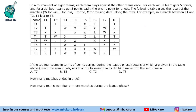For each win, a team gets 5 points. For a tie, both teams get 3 points, and there is no point for a loss. The table gives the result of the matches: W for win, L for loss, T for tie, and X for missing data. So we have some missing data in this table.